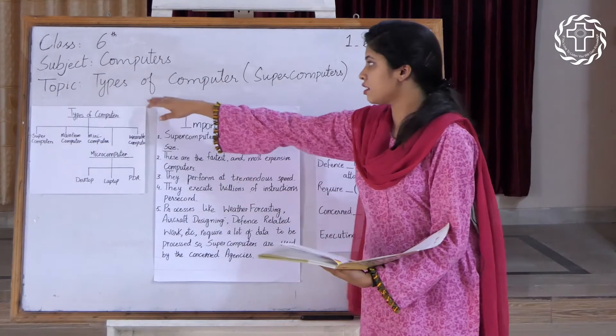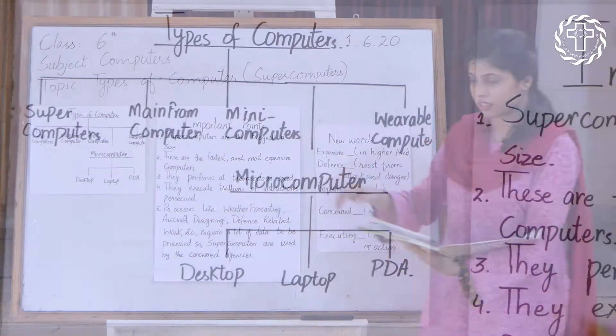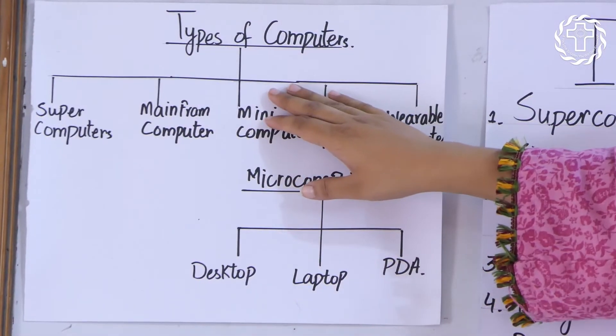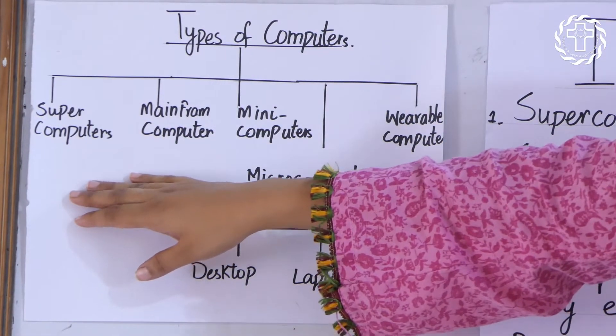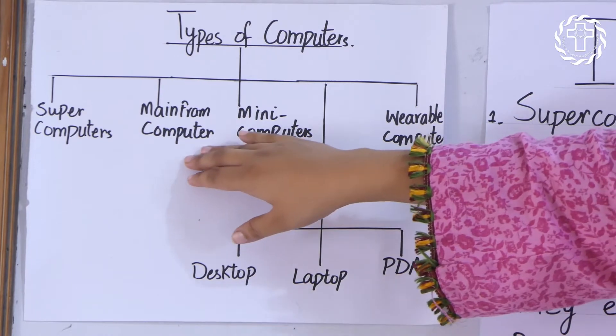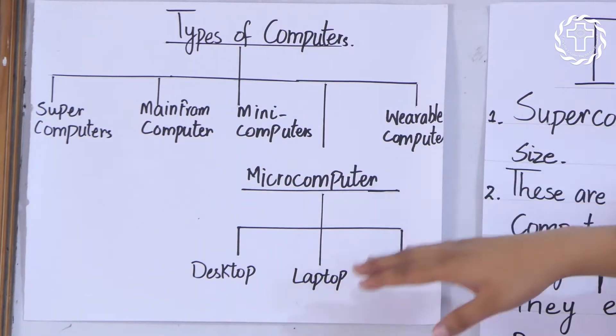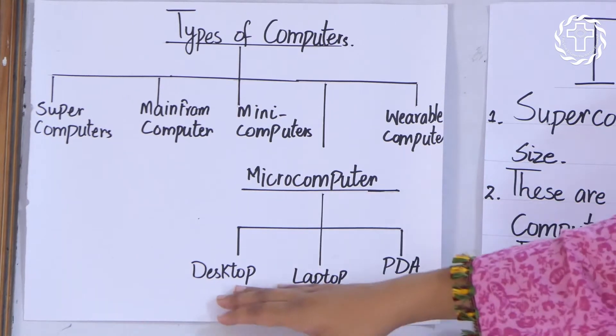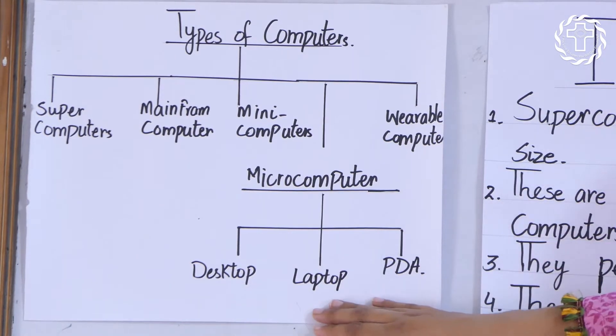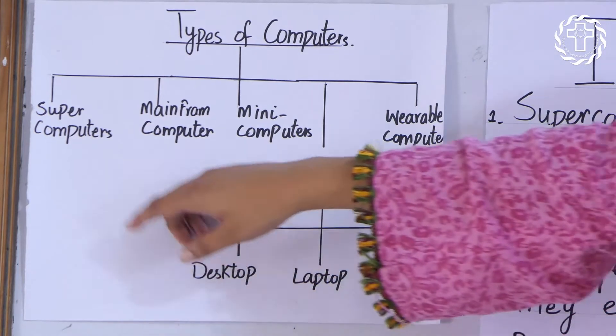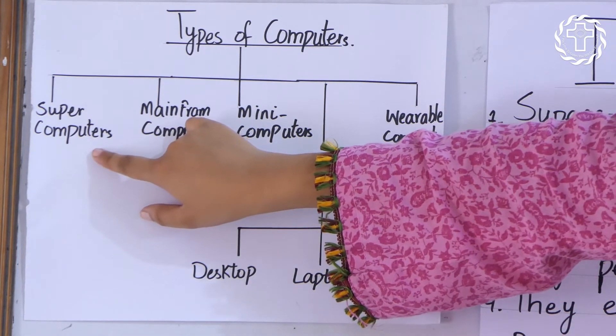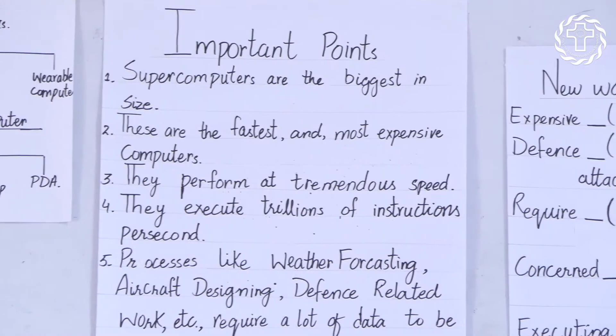Class 6: Types of Computer. These are the types of computer: supercomputer, mainframe computer, minicomputer, wearable computer, microcomputer, desktop, laptop, and PDA. But today we will read about only supercomputers, so I'm going to start.